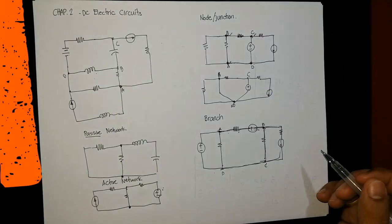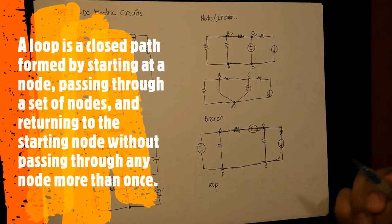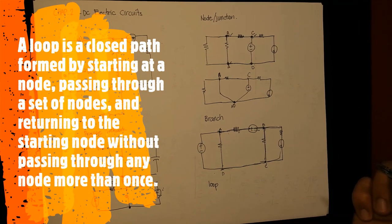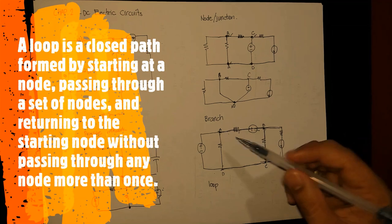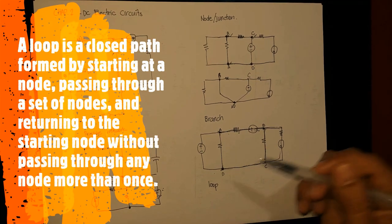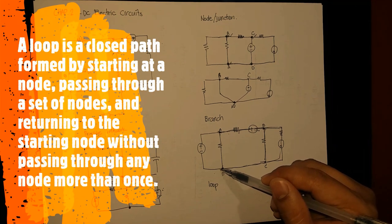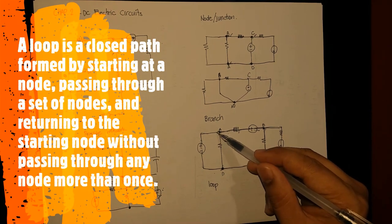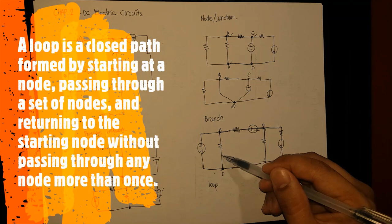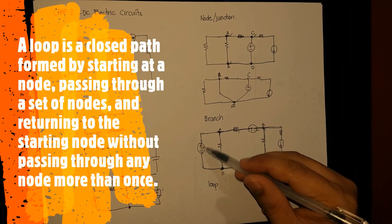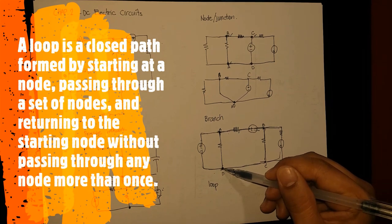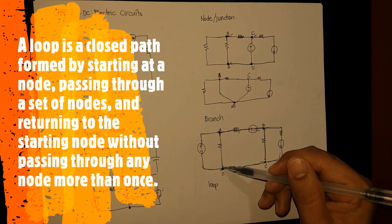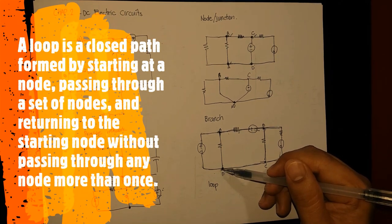How about the loop? A loop is a closed path formed by starting at a node, passing through a set of nodes, and returning to the starting node without passing through any node more than once. To make things easier: start at a node, trace a line passing through a single component or series of components, passing through nodes, and returning to that same starting node. When you return to the node you started from — regardless of how many components and nodes you passed through — that is considered a loop.